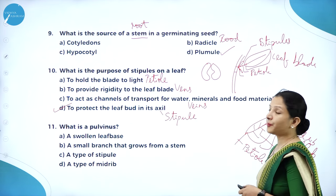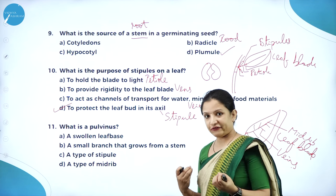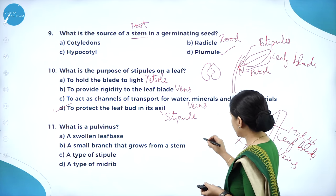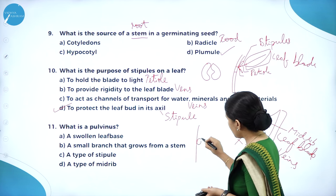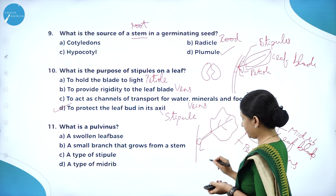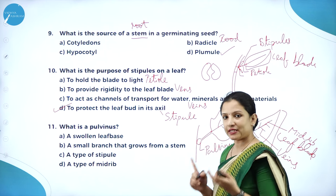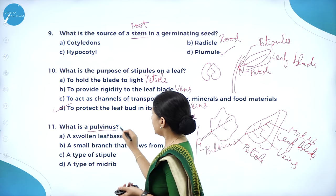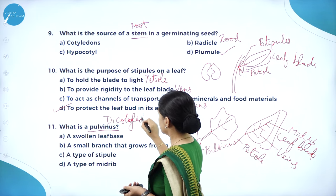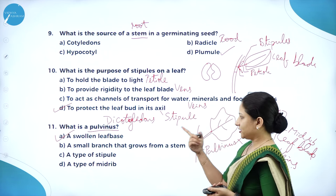What is pulvinus? Pulvinus is a swollen leaf base. In dicotyledons — such as the bean plant — where the leaf arises, there is a small swelling at the leaf base called pulvinus. Monocots will not have this. It is usually seen in dicotyledons. Option A — swollen leaf base — is the right answer.